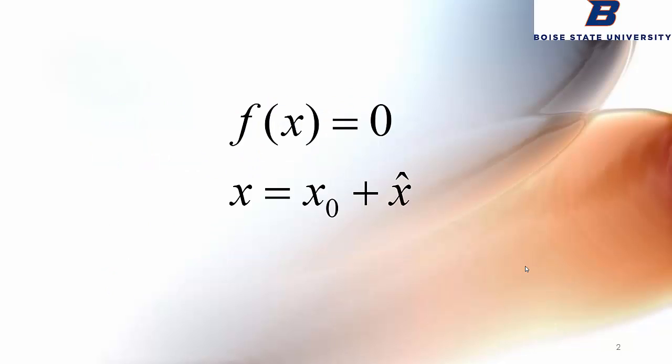Here's the mathematical definition of our problem. We have a function f of x, and we want to find the root or roots of that function, which are the values of x for which this equation f of x equals 0 holds. We'll start by making a substitution. x is our independent variable, and we're going to make it a sum of two sub-variables, x0 and x hat.